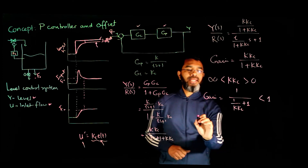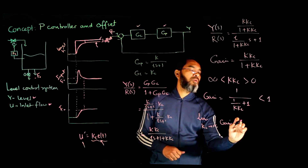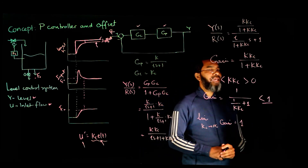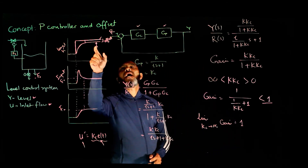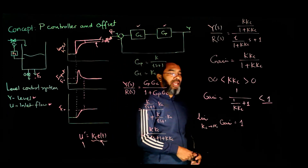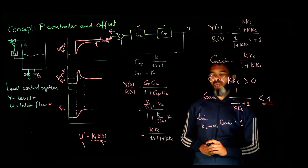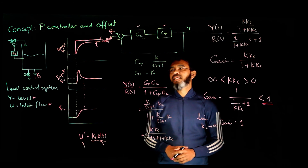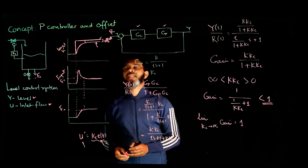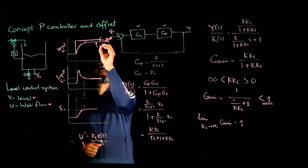Only in the limit that Kc goes to infinity will this gain equal 1. For any finite value of the controller gain, the gain will be less than 1, meaning if there is a set point change the output will not reach the set point but will settle at some other value. For example, a set point change of 10 units will result in an output less than 10. This block diagram analysis confirms that for a proportional-only controller, there will always be an offset, defined as the set point minus the output at steady state.